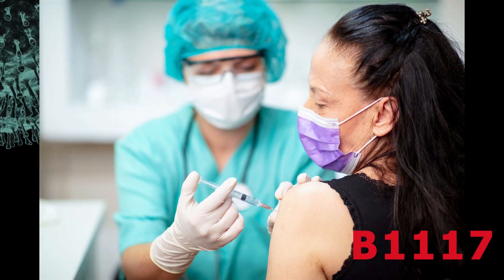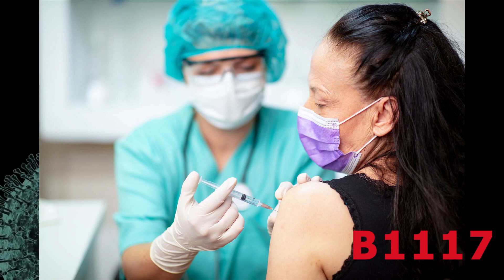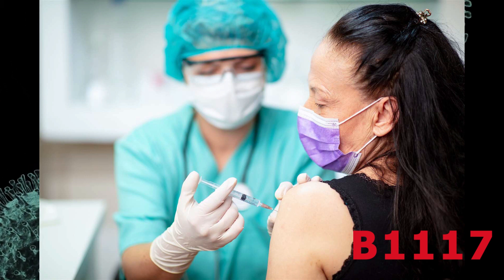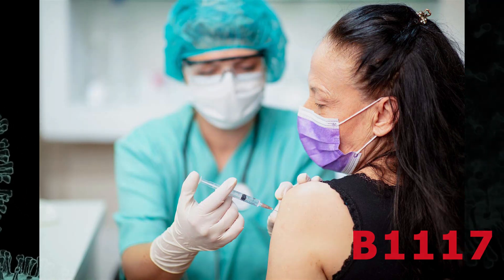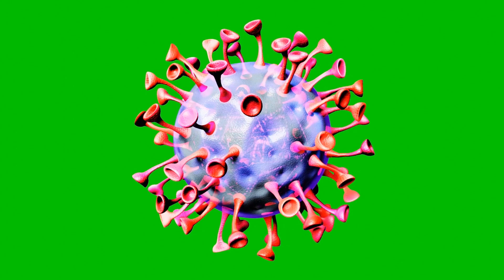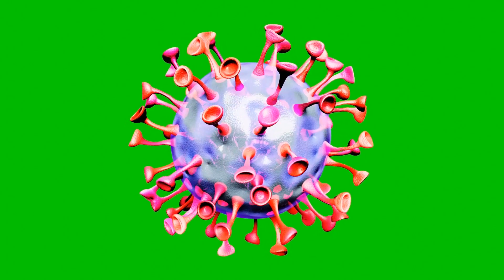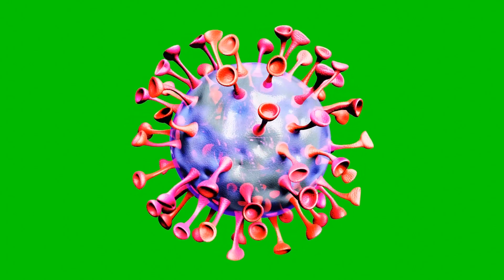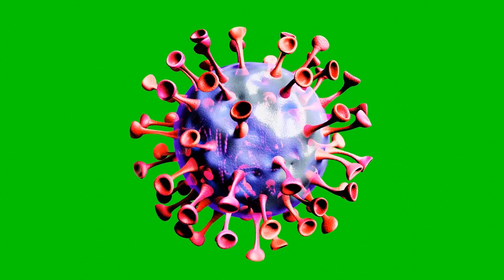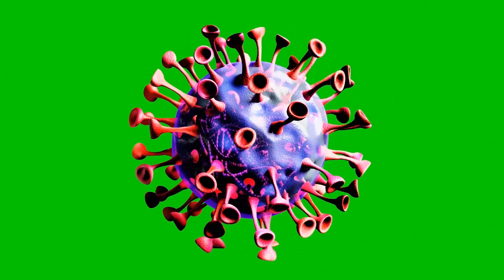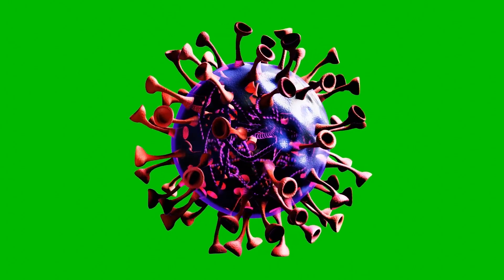The B.1.1.7 virus strain was discovered after coronavirus spread to a human. To kill the virus, this human takes vaccines. To overcome the vaccines and medicines, the virus mutated to B.1.1.7. Will there be other new strains more contagious than B.1.1.7? We don't have any answers. Nobody in the world has answers. We can only speculate that if viruses continue to mutate, we will have thousands of mutated viruses in the world.